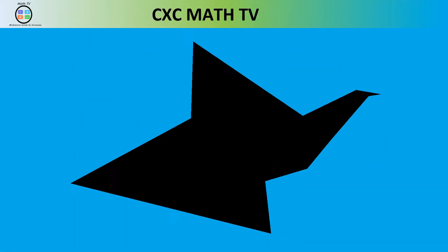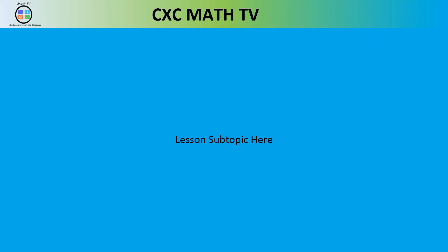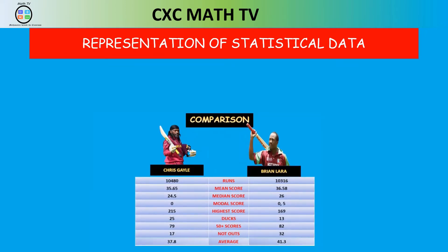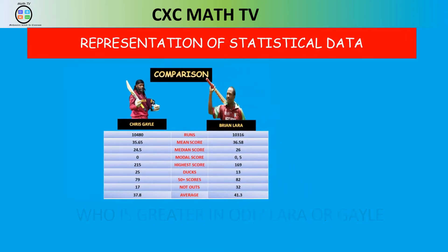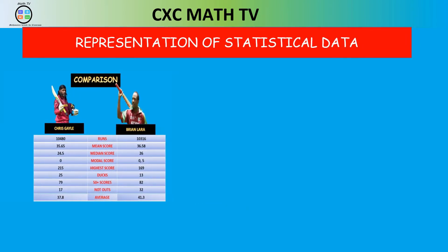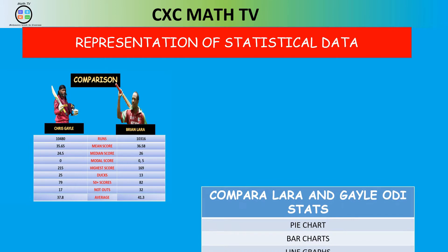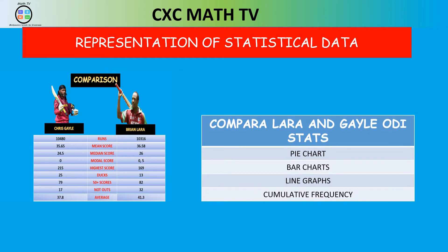Welcome to CXEMAT TV. In this video we're going to be talking about the representation of statistical data. Here we have a picture of Chris Gayle and Brian Lara — we may ask who was a better ODI cricketer. You can see how many runs each of them scored, their mean score, median, mode, and highest score. To represent these and describe who is better, we're used to using pie charts, bar charts, the line graph, and cumulative frequency — that's what we do in CSEC mathematics.